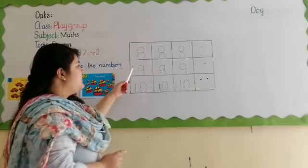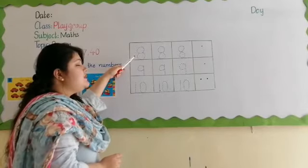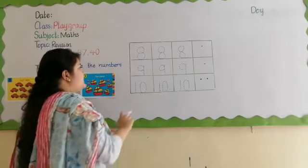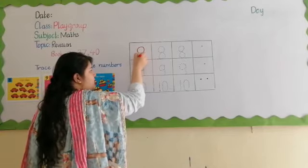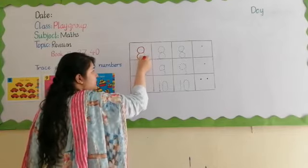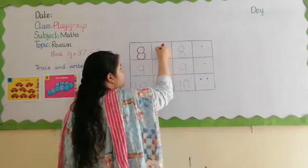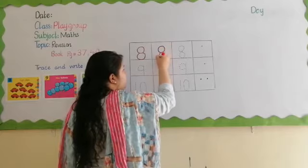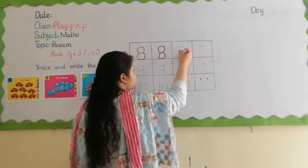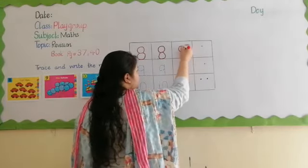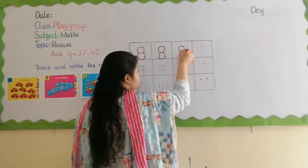Okay students, we will do writing here. Which number is this? 8. Which number is this? 8. Let's start writing 8. Go round and round — it's 8. Again: go round and round — 8. Again: go round and round and round — 8.